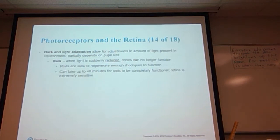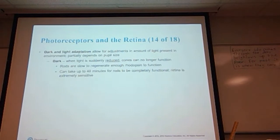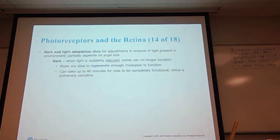Adaptations for dark and light allow for adjustments in the amount of light present in the environment, partially depending on pupil size. When light is suddenly reduced, cones no longer function — that's why when you turn the lights off, for the first few moments you are completely blind and can't see anything. Rods are slow to regenerate enough rhodopsin to function, and take up to 40 minutes to completely become functional again. For example, if you go into a coal mine and your headlamp goes out, you are completely blind for an extended period before your eyes begin to adjust.